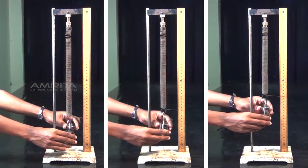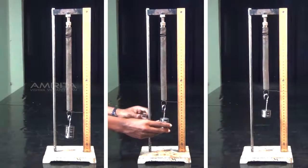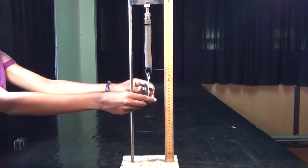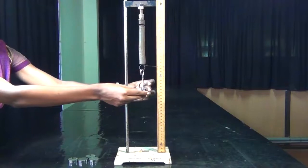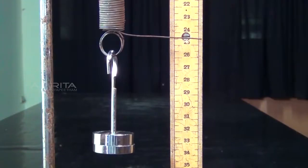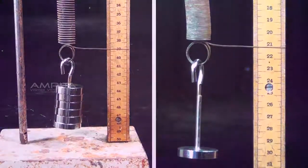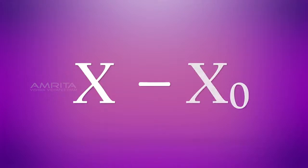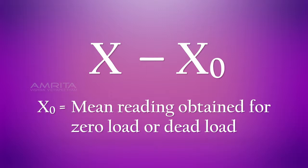Now, slotted weights are unloaded one by one and each time the reading of the pointer is noted. Repeat the process till only the hanger is left. The mean of readings x corresponding to loading and unloading for each load M is calculated, and the corresponding extension L is determined by finding x minus x0, where x0 is the mean reading obtained from zero load or dead load.